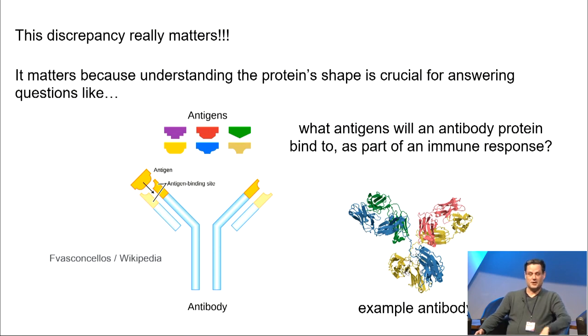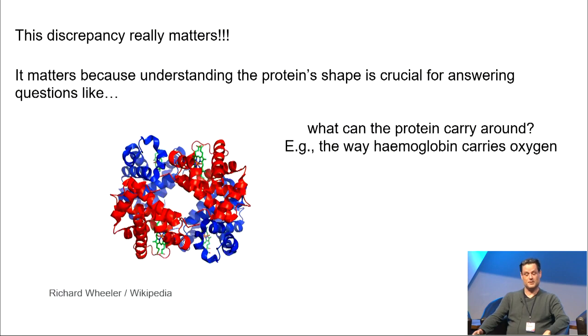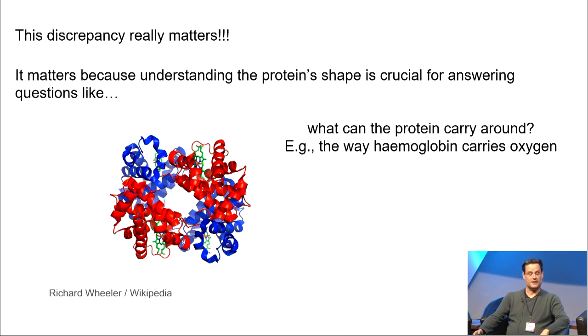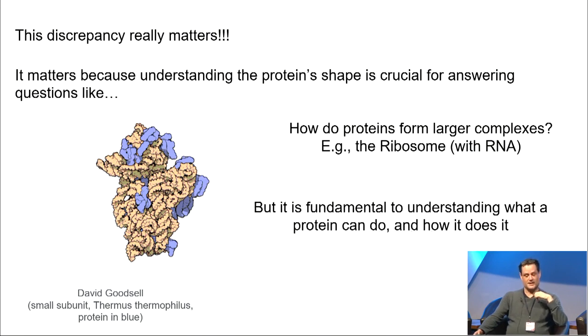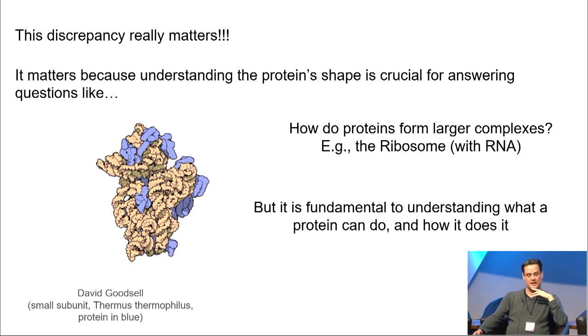So, that discrepancy in cost and time really, really matters. It matters because understanding the protein's shape is absolutely crucial for answering questions like, what antigens will an antibody protein bind to as part of an immune response? Or, what can the protein carry around, the way hemoglobin carries oxygen? Or, how do proteins form larger complexes, like the way the ribosome is formed? So, there are many, many questions like that.